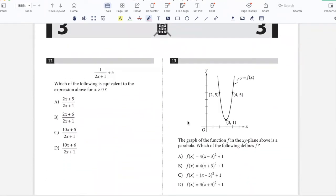Which of the following is equivalent to the expression above? I can write 2X plus 1 times 1 plus 5 times 2X plus 1, so 1 plus 10X plus 5 divided by 2X plus 1, which is 10X plus 6 divided by 2X plus 1. Option D.